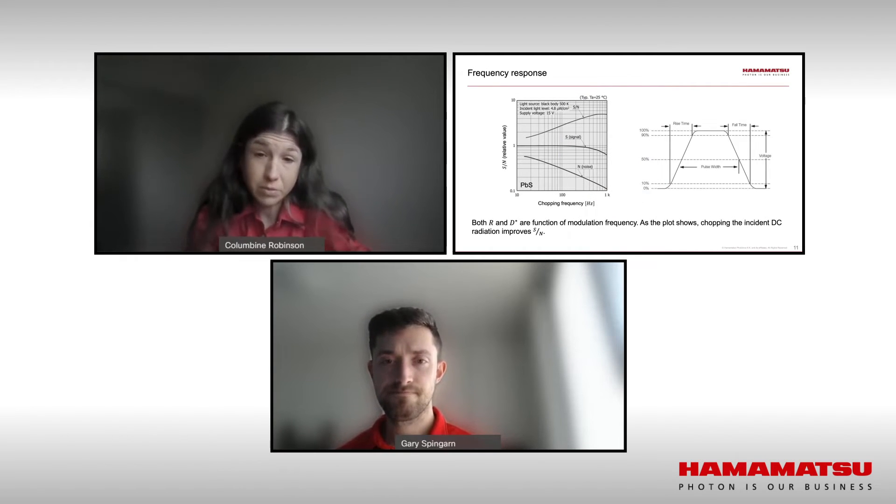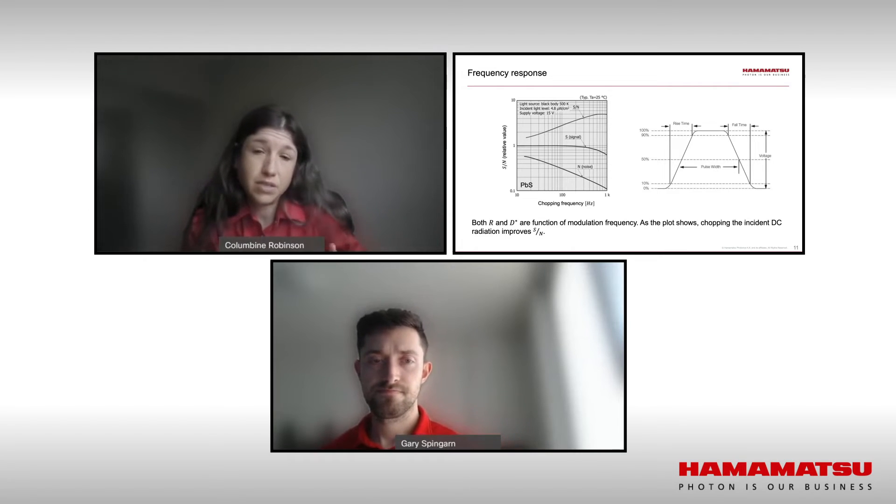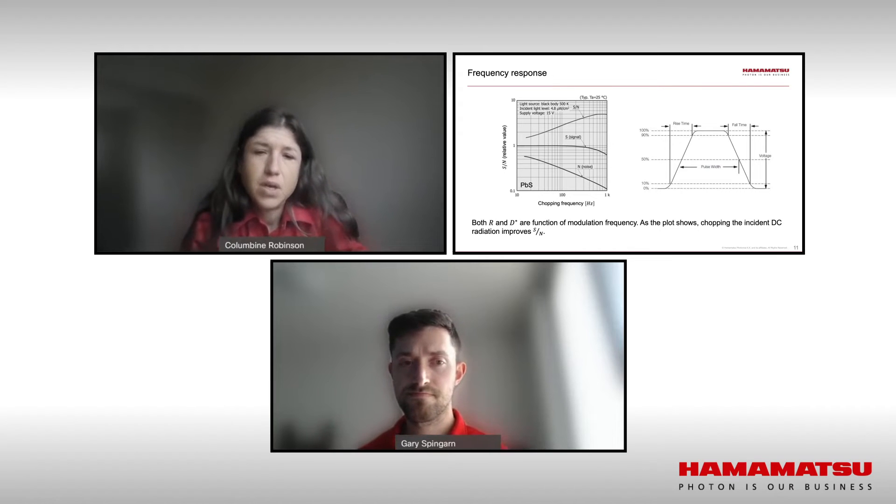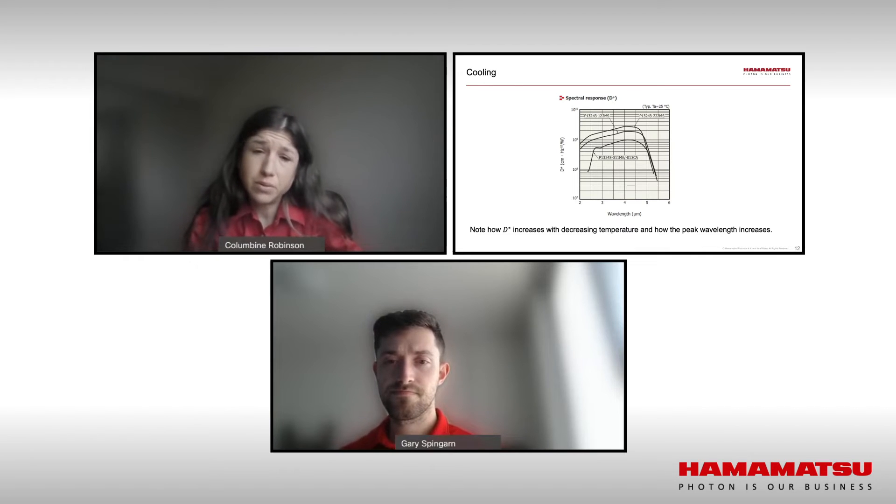Speed or frequency response is simply the rise time of the detector, usually in the form of how long it takes for the signal to go from zero to the peak output. Sometimes data sheets will list frequency response, which is dependent on rise time. Cooling will increase d-star by lowering the noise floor, but it's important to remember that cooling will drive up cost, size, and power consumption.